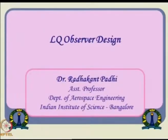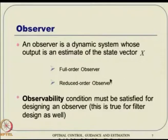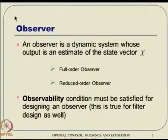LQ observer design first — let us see what the idea is. Here we do not really require any random variable concepts and we do not want to go to the filtering ideas in this particular development. Let us talk about a noise-free situation. In other words, system dynamics is known perfectly, the system variables are also known properly, and the output is also noise-free. An observer is a dynamic system whose output is an estimate of the system state vector x — that is the definition. Essentially, when we talk about having an observer, we have some sort of artificial system dynamics whose output is nothing but the state vector.